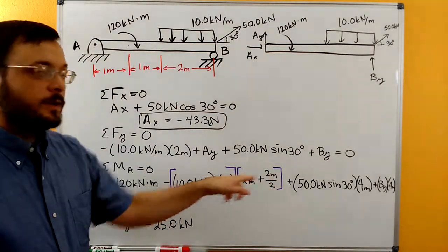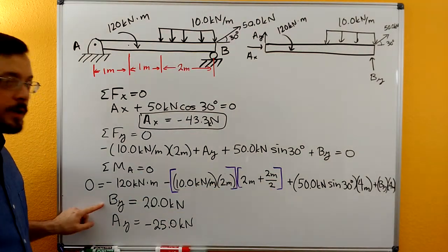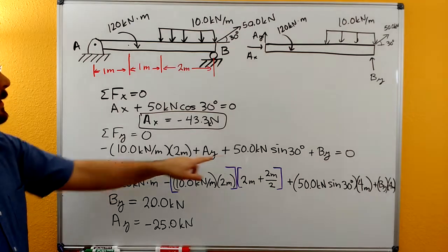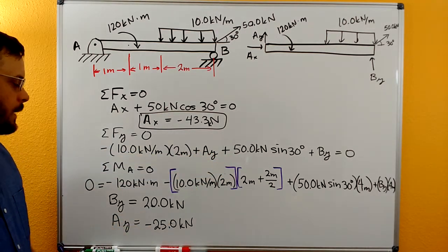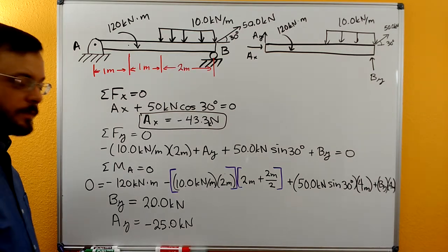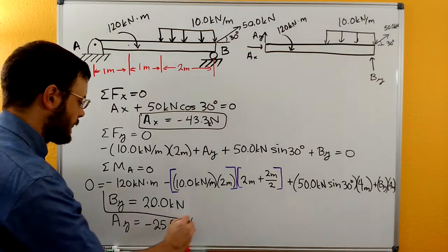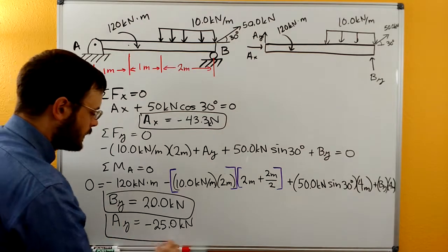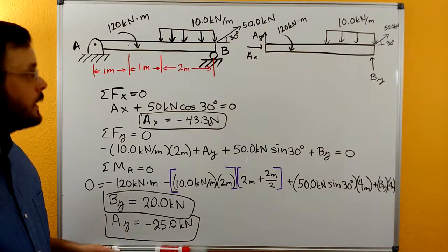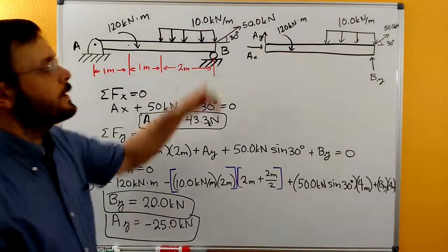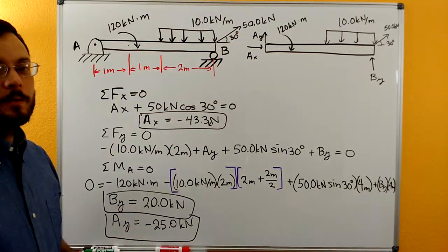The only unknown that we have in this equation is BY. So we can solve for BY. And then we just plug BY back into our sum forces in the Y equation. And we get AY is negative 25 kilonewtons. So we have our AX here, our BY there, and then our AY here. The negative sign on the AY just means that AY is pointing down instead of pointing up.